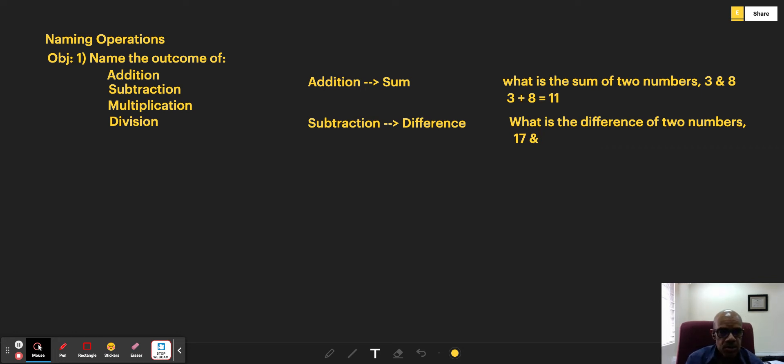The difference is the outcome of subtracting the two numbers. So 17 minus 6 is 11. The difference between 17 and 6 is 11.